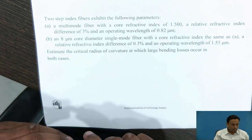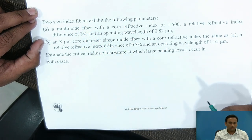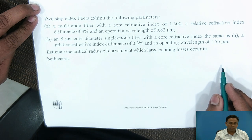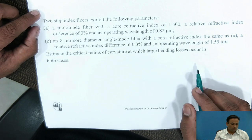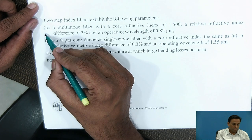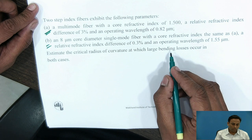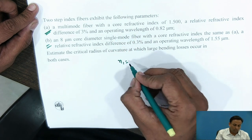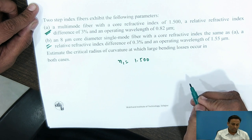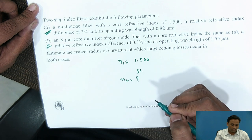We will now solve an example on bending losses to calculate the critical radius for single-mode and multimode. A step-index fiber is given — step-index means the core has uniform refractive index. There are two cases: Case A is a multimode fiber with core refractive index N1 = 1.5, relative refractive index difference Δ = 3%, and operating wavelength λ = 0.82 micrometers. N2 is not given so we must calculate it.